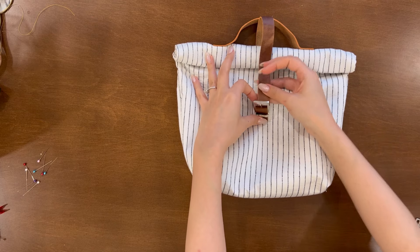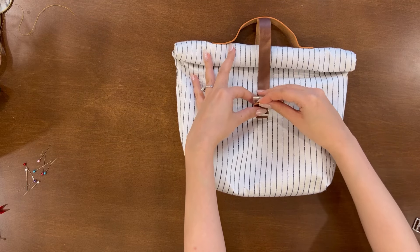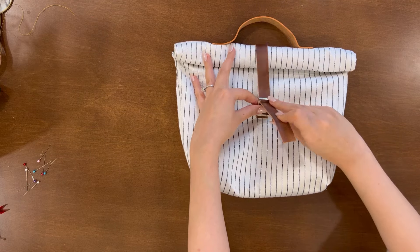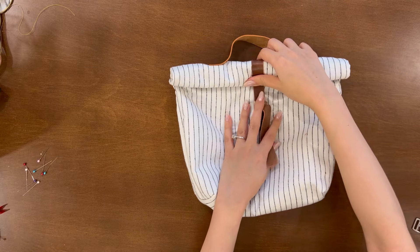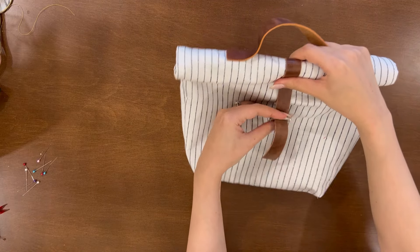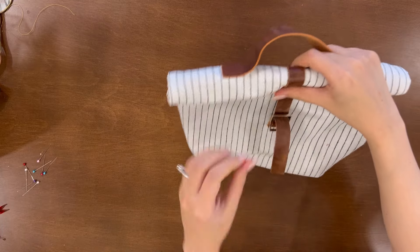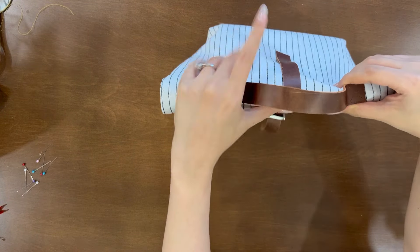After that insert the strap inside of the buckle and pull until the strap touches the roll. You can pull the bottom side of the bag and adjust it until you're satisfied with the adjustments.